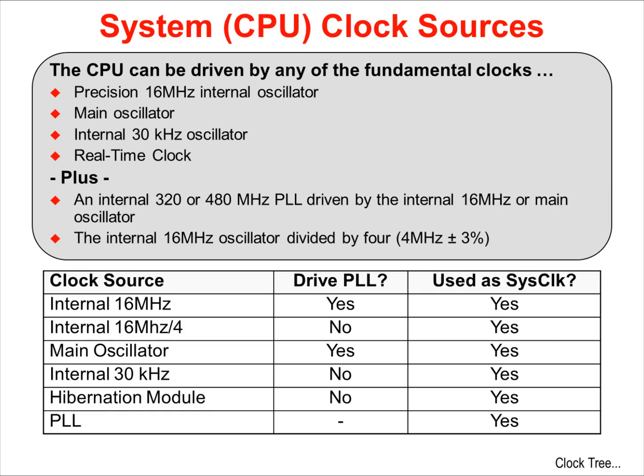In addition, we have an internal phase lock loop, or PLL, that runs at both 320 or 480 MHz. You can't run the CPU at these speeds — dividers limit you to 120 MHz and below.